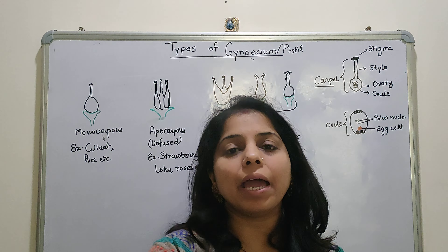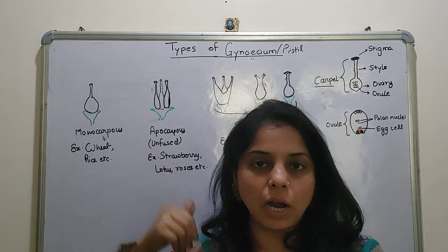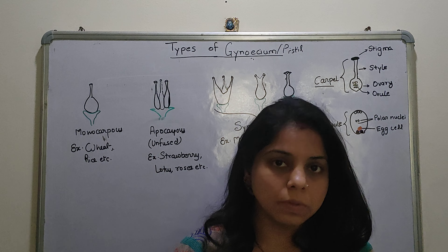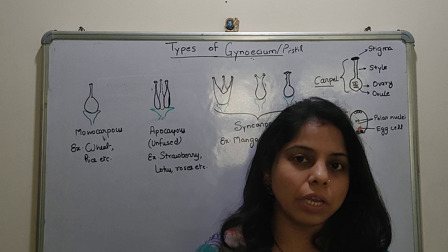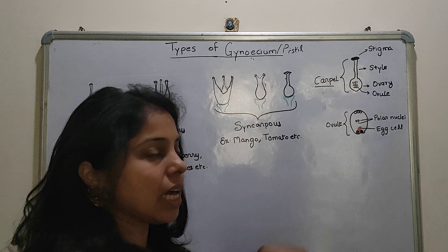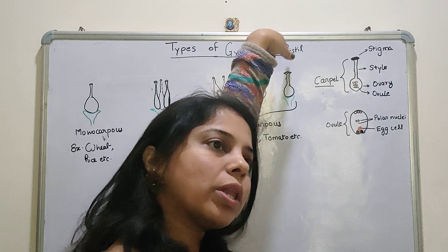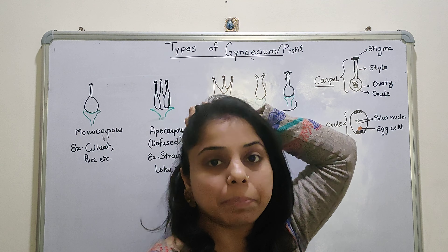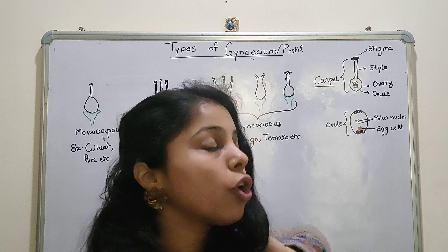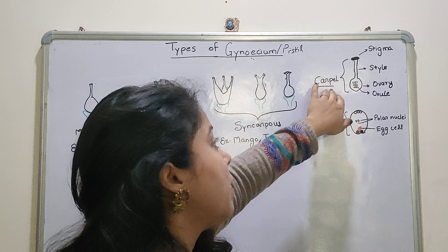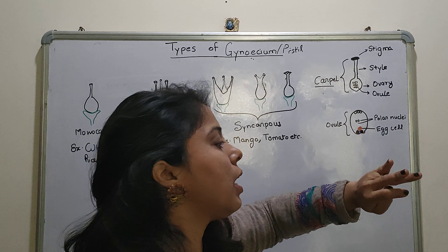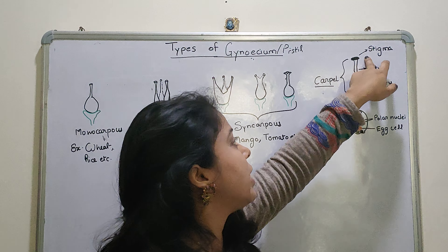Gynoecium is a Greek word meaning female. That means inside a flower, gynoecium is the place where the female resides. It is called female because there is an egg cell present. The male gamete will come, fertilization will occur, and it will ultimately become an embryo, which will enable further reproduction.